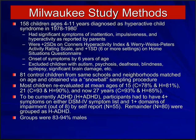We also required that they have symptoms that were developmentally inappropriate, measured by giving families the Connors Parent Rating Scale and the Weary-Weiss-Peters Activity Rating Scale. Children were required to be excessive in their ratings — at least the 98th percentile on the Connors Hyperactivity Index, and at least the 84th percentile on the Weary-Weiss-Peters scale. They were also required to demonstrate behavior problems that were situationally pervasive, as measured by the Home Situations Questionnaire. Children had to have an onset of symptoms by six years of age, and we excluded more severe forms of psychopathology.